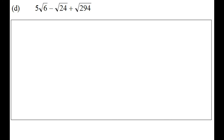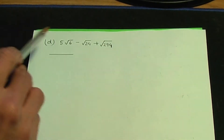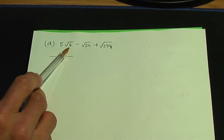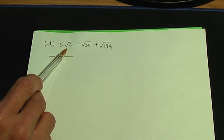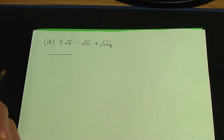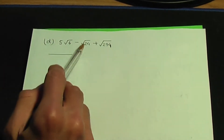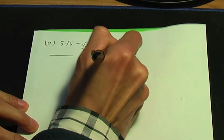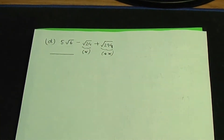Part D of example 1: simplify 5 root 6 minus root 24 plus root 294. Root 6 cannot be broken down into a root that gives a whole number multiplied by a root of a remaining term, so it cannot be simplified further. Let's concentrate on root 24 and root 294, naming them star and double star respectively.